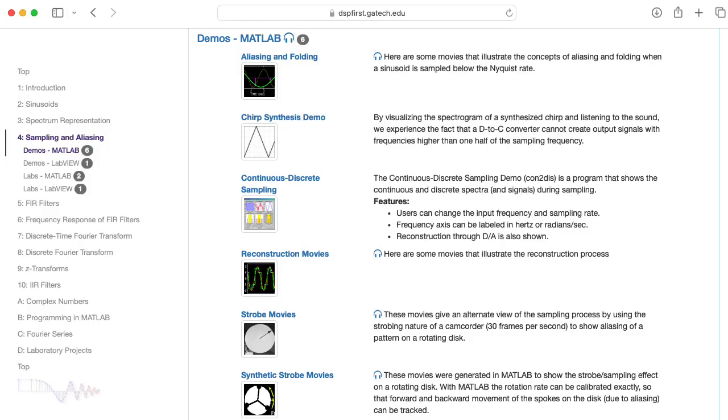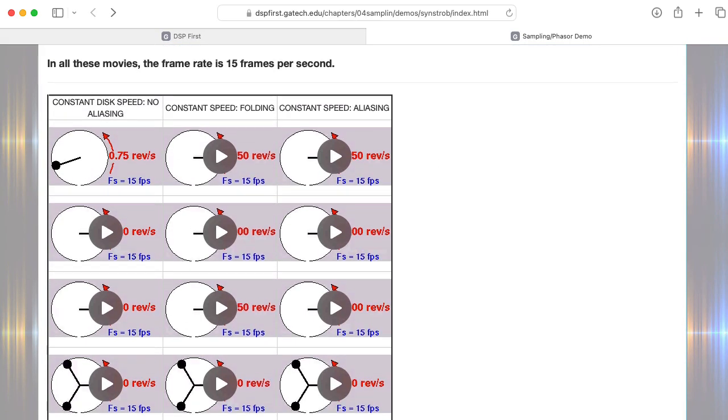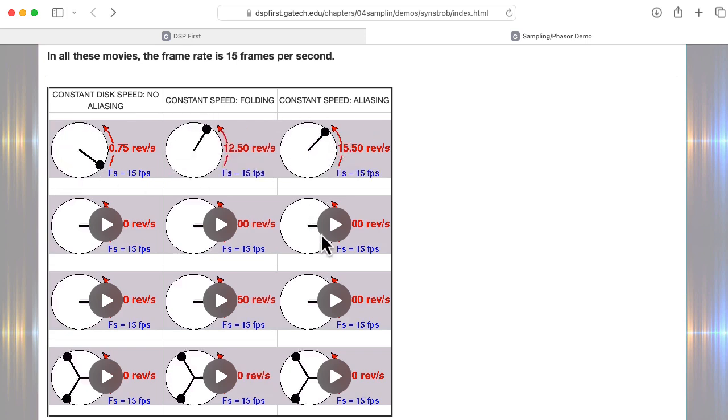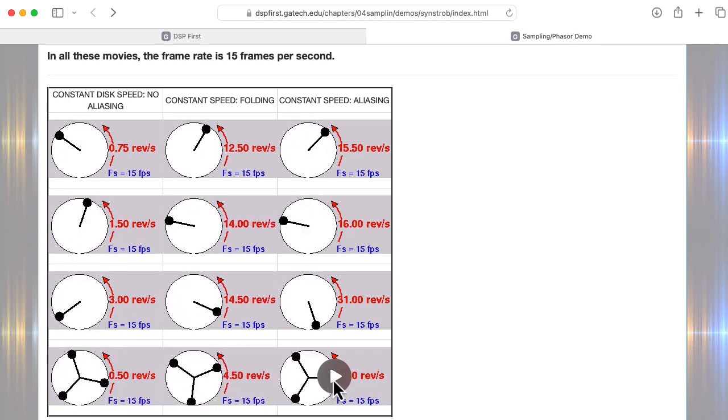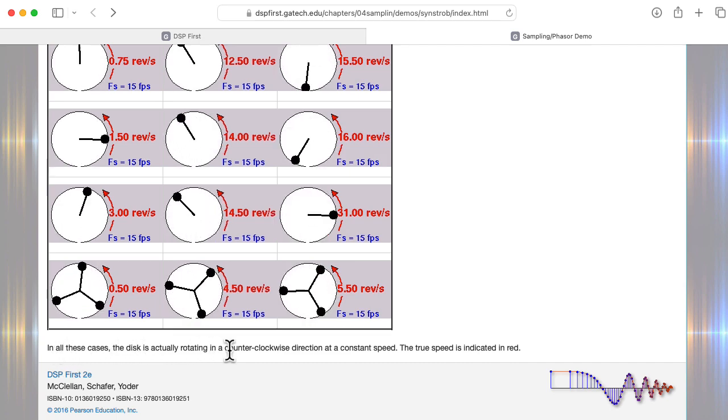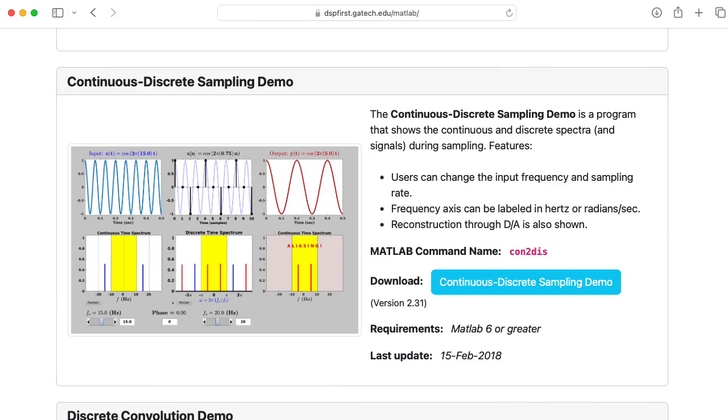The website also has these synthetic strobe movies. I'm not going to go over these in details here, but you should go to the website and check these out and think about what they're doing. In all these cases, the disc is actually rotating in a counterclockwise direction at a constant speed. The SPFIRST toolbox includes this CON2Disc demo where you can set an input frequency, set a sampling rate, choose a phase, and look at the input signal, the sampled signal, the reconstructed signal, and the various spectra.